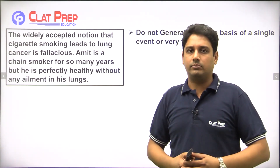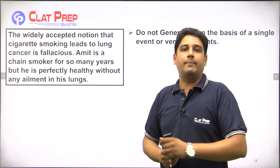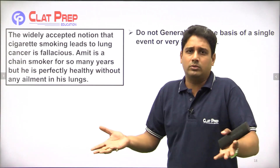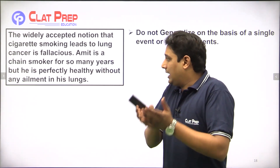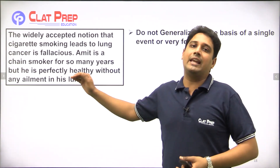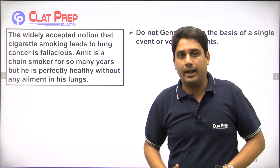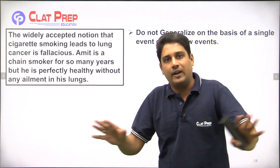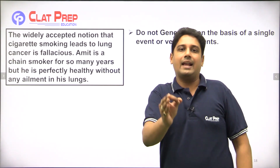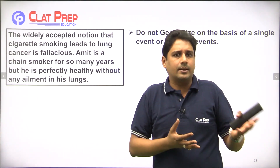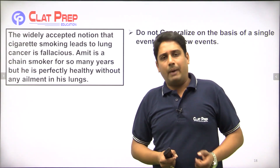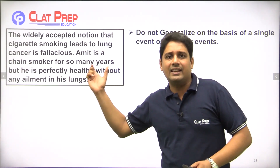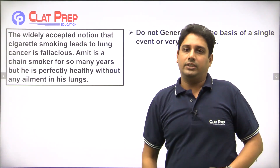The author says the common belief that cigarette smoking causes lung cancer is wrong. Why is it wrong? Because the author has created an example — Amit, who is a chain smoker for so many years, has no problem with his lung functioning. The author is saying that because Amit has no problem, smoking causing lung cancer is completely wrong. But can't there be an exception? The majority of people who smoke do suffer from lung cancer — it is very obvious. You can't just generalize based on one example.